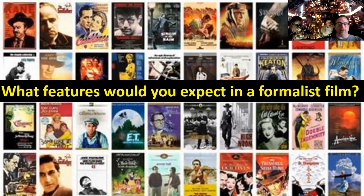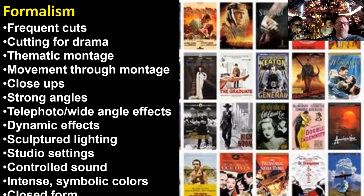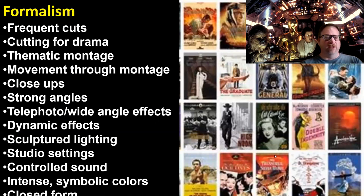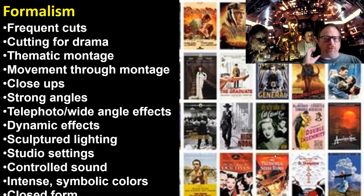So what features would you expect to see in a formalist film? We're going to have very frequent cuts, we're going to edit it a lot. We're going to cut for dramatic effect and also to carry our story along, even if we eliminate some details. We're going to do thematic montage — cutting one image next to another to make relationships or allow the audience to make their own relationships. We'll do movement through different versions of camera and montage. Montage, from the French word to assemble, means we assemble different shots together. We're going to have a lot more close-ups to get emotional reactions, and also because we can set the shot up and change the angles — it's much easier to get close-ups and ensure consistent lighting.